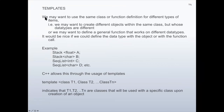Templates: We may want to use the same class or function definition for different types of items. That is, we may want to create different objects within the same class but whose data types are different. Or, we may want to define a general function that works on different data types. It would be nice if we could define the data type with the object or with the function calls.